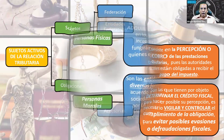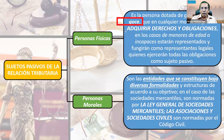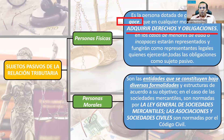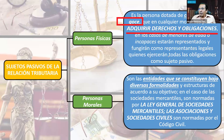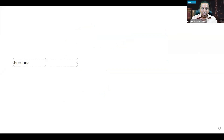Los sujetos pasivos de la obligación tributaria son personas físicas y personas morales. Las personas físicas están dotadas de capacidad de goce y pueden adquirir derechos y obligaciones en cualquier momento. Los menores de edad van a encontrarse representados y ejercerán obligaciones como sujetos pasivos. Cuando hablamos de las personas físicas, hay que hablar de sus atributos: capacidad, nombre, estado de familia, patrimonio, nacionalidad y domicilio.